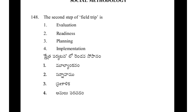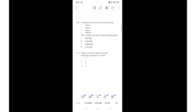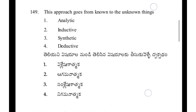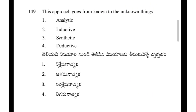The second step of a field trip is readiness — option 2. The approach that goes from known to the unknown things — option 1: analytic.